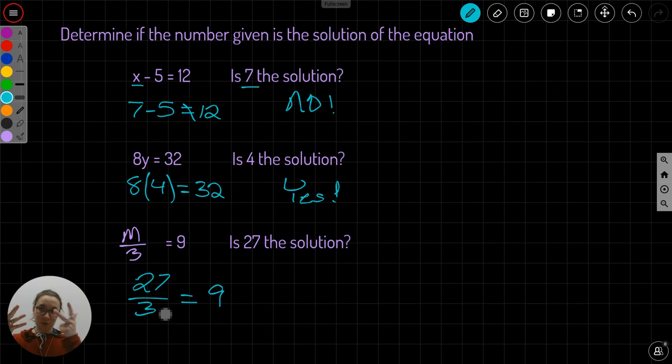3, 6, 9, 12, 15, 18, 21, 24, 27. That's 9. Yes. This is the correct solution to this problem. Yes.